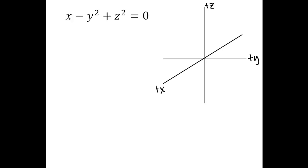Often I start by doing the trace in the yz plane where I would plug in x equals zero, but I'm actually not going to start with that trace for this one. I'm going to do a little bit of rearranging of the original equation to start with, so that we can recognize a couple of features we're going to have for this surface. If I move the two squared terms to one side and leave the non-squared term on the other side, I'll get x equals y squared minus z squared.